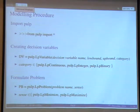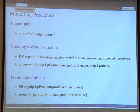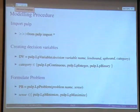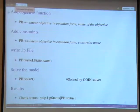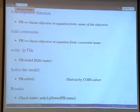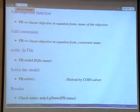There are three things we need to do in any optimization model: define the decision variables, write the constraints, and write the objective function. First, import PuLP. Then use the LP variable function to define a decision variable, specifying its bounds and category — integer or continuous. Then formulate the problem as either a maximization or minimization, add the objective function, and keep adding constraints as mathematical equations. Finally, solve the problem and retrieve the status and solution values.